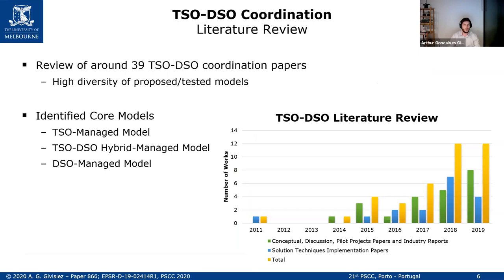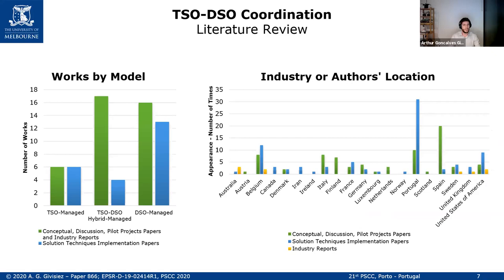Here is an overview of the literature review. We reviewed 39 TSO-DSO coordination papers. As mentioned, there are different models, so we came up with three identified models: TSO Managed Model, TSO-DSO Hybrid Managed Model, and DSO Managed Model. This paper covers work from 2011 to 2019 and research in this area is increasing over the years. The most studied model is the DSO managed model, however there are also a lot of conceptual papers on the hybrid managed model. Authors are from all around the world — mainly Europe, North America, and Australia.